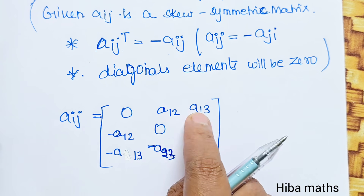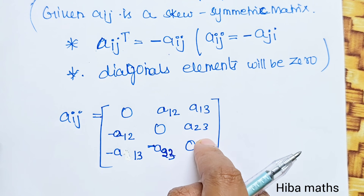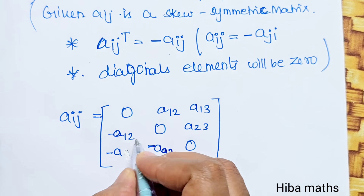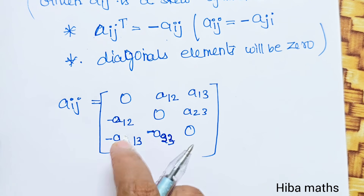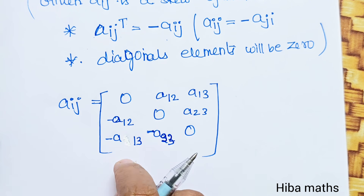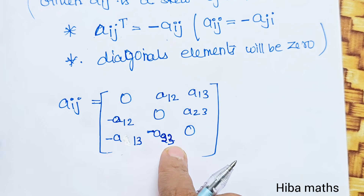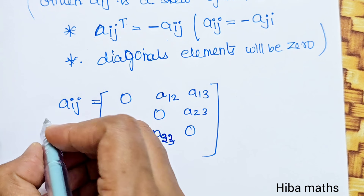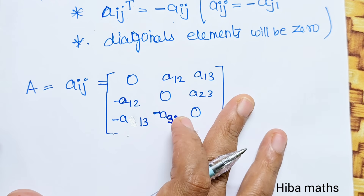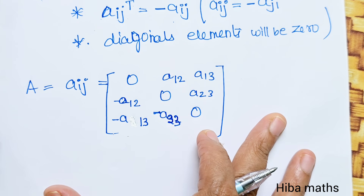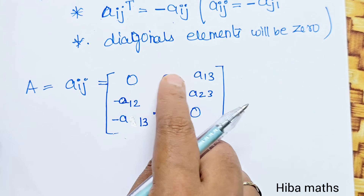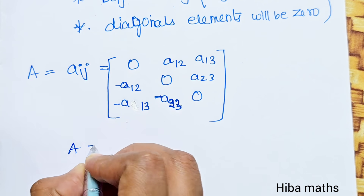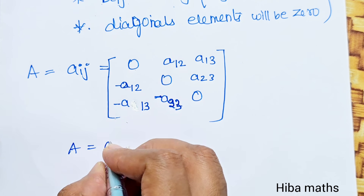We form the skew symmetric matrix with diagonal zeros. The off-diagonal entries satisfy: a12, a13, a23 in the upper triangle, and minus a12, minus a13, minus a23 in the lower triangle. So the matrix A with elements A12, A13 — expanding the determinant, the first element is zero times anything, which is zero.